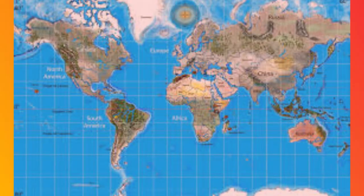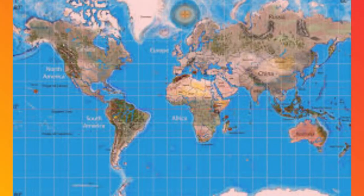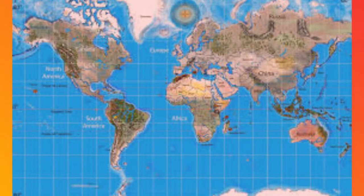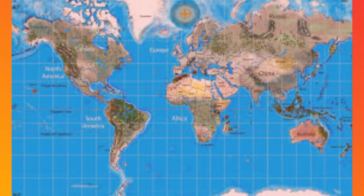Mercator's projection was designed in the 16th century for navigational use, but was adopted inappropriately for use as a world reference map.